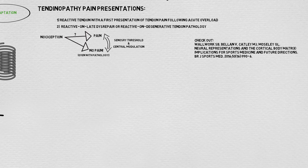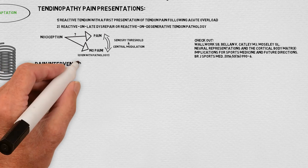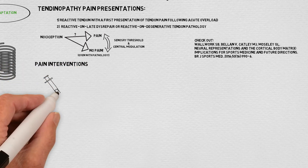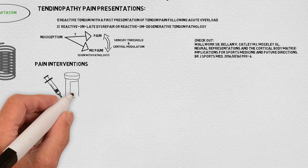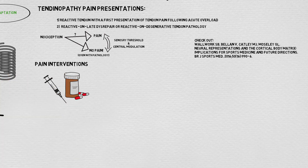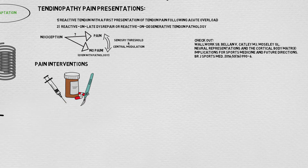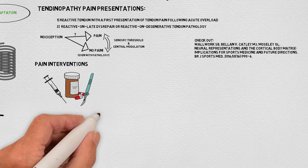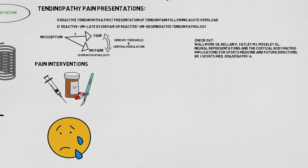The update closes with some suggestions on how to use the continuum to guide treatment. They highlight the lack of long-term relief from many common pain-relieving interventions such as NSAIDs, steroid injections, high-volume injection, and surgical scraping. They also note that interventions solely targeting pain typically allow for recurrence of pain.